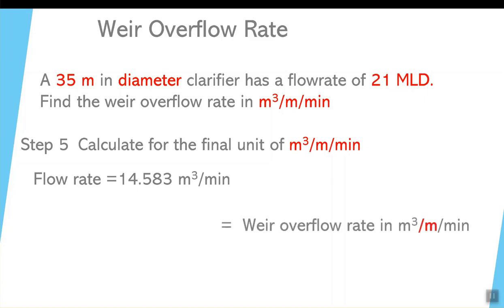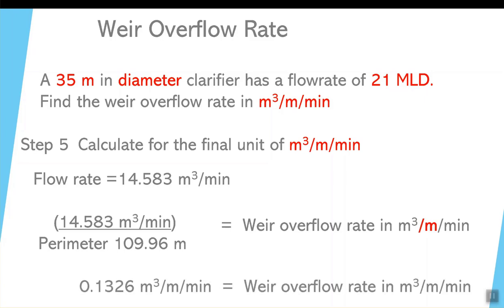So as a result, we take the previous answer in cubic meters per minute, and we divide it by meters, and then notice we will get the unit of cubic meters per meter per minute. And the answer is 0.1326 cubic meters per meter per minute. That's going to be the weir overflow rate for this particular water plant.